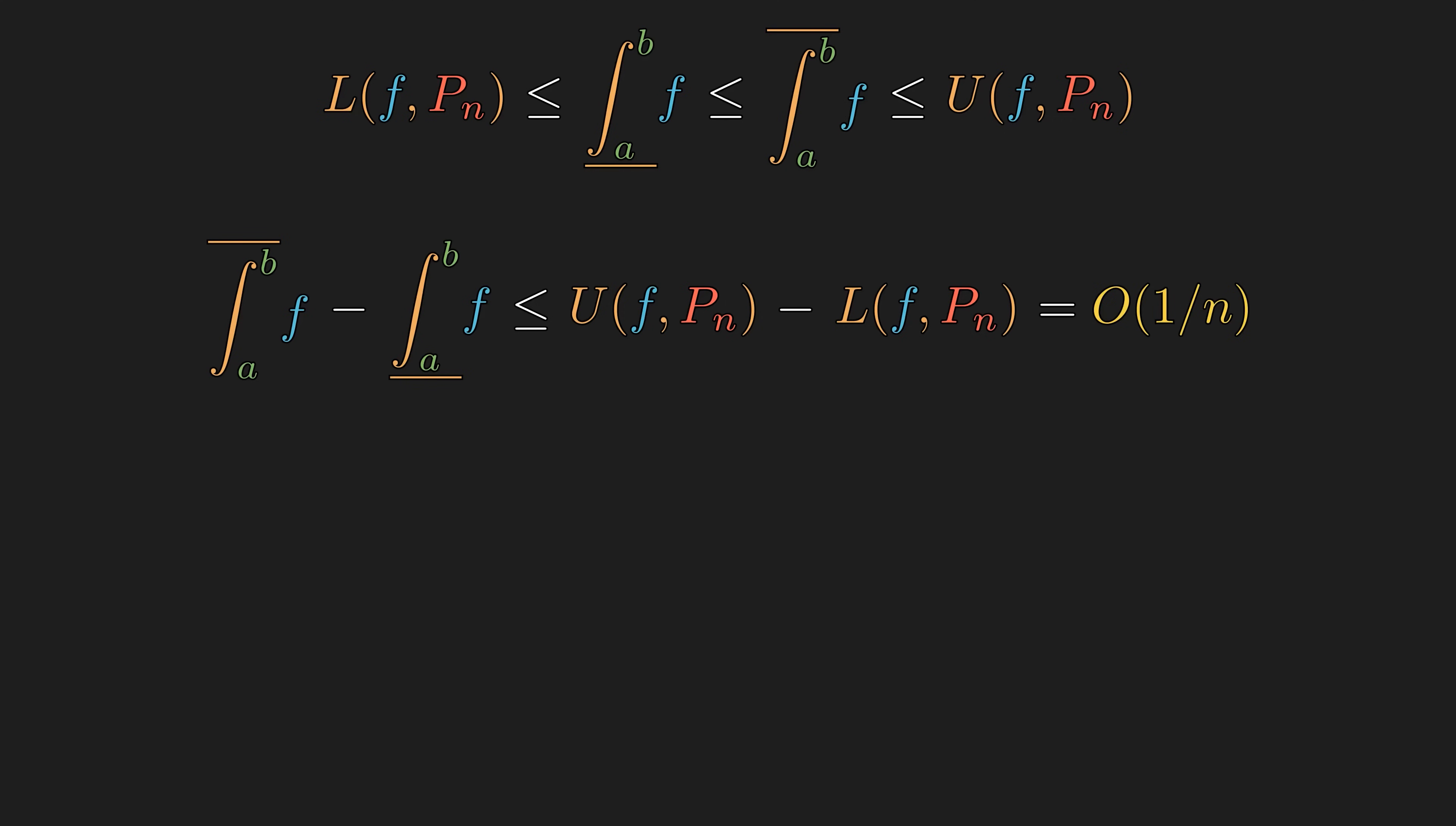The difference between the upper and the lower integral should be less than or equal to the difference between the upper and the lower sum of our equipartition, with their difference on the order of 1 over n. This has to hold for all values of n, no matter how big n is. Once we pass it to the limit, 1 over n goes to 0. So the upper and the lower integral have to be the same value.